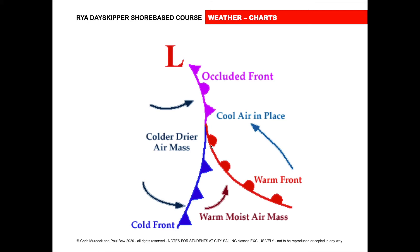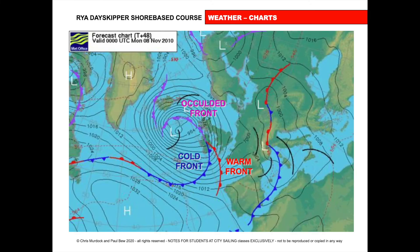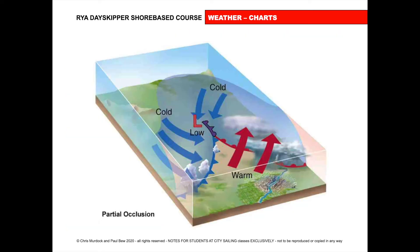So the symbol on the weather map for a warm front is these bumps here, and the symbol for a cold front are these triangles here. When the warm air has been forced above the cold air, it's not on the land, it's up in the sky, and this is shown as an occluded front — that's shown on the weather map as a triangle, then a bump, triangle, then a bump. So here from a weather map, we have the warm air in the middle, the warm front here, the cold front here, and the occluded front where the warm air has been forced above the surface.